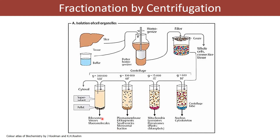Then separate the supernatant and transfer it into another centrifuge tube. Again increase the g-force to about 1 lakh g and spin for about an hour. You will find plasma membrane fragments and endoplasmic reticulum fragments getting separated. The supernatant, which still contains smaller molecules and organelles, is then subjected to about 3 lakh g-force for about 2 hours, and in the precipitate you will have ribosomes, viruses, and macromolecules.